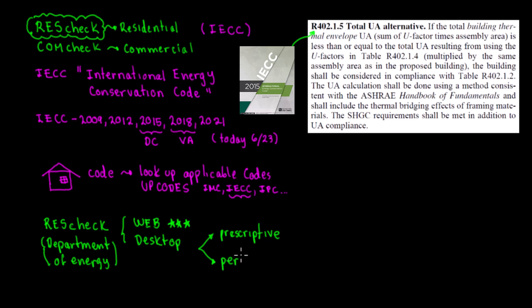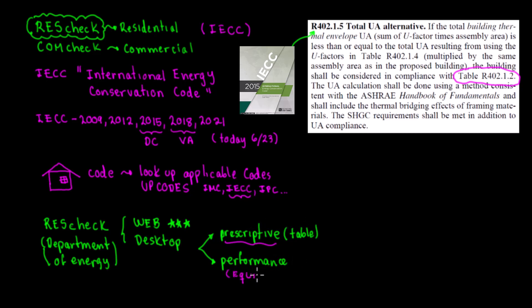The two compliance paths in ResCheck are prescriptive and performance. Prescriptive is essentially a table — specifically Table R402.1.2 — which indicates the minimum insulation values for the building envelope. The performance method also includes equipment, such as the HVAC equipment efficiency.